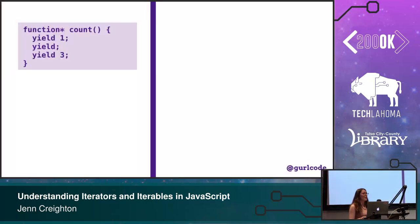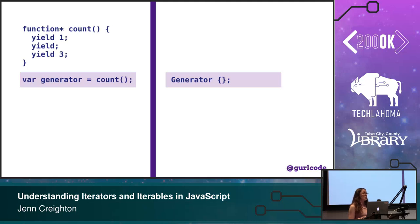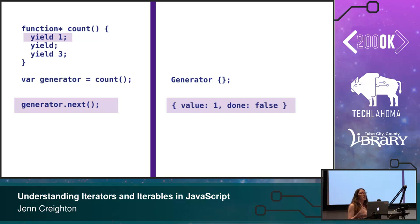So this is a generator. I know it's a generator because it has an asterisk next to the function keyword. Inside that generator you're also going to see a special statement called yield, and yield in a generator means pause. To use the generator, we call it and get back a generator object. That generator object has on it a method called next. When you call next, you get back an object with two keys: value and done. Value is whatever is to the right of the yield statement.